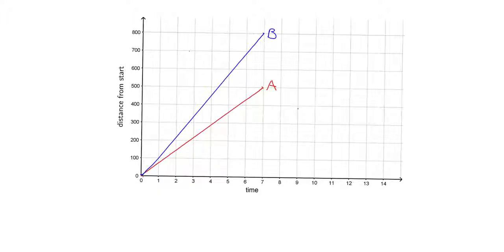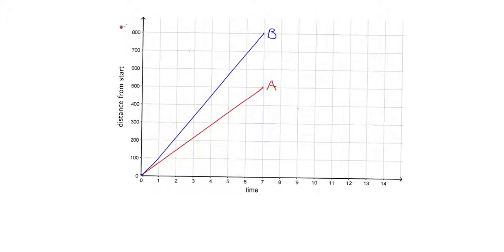How long did both of them walk for? Well, we've got information up until seven minutes, so they walked for seven minutes. How far did they walk in those seven minutes? Well, let's look where B ended up — B ended up at 800 meters, so B's total was an 800-meter walk. What about A? In those seven minutes A only walked 500 meters.